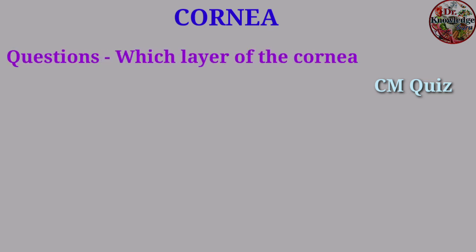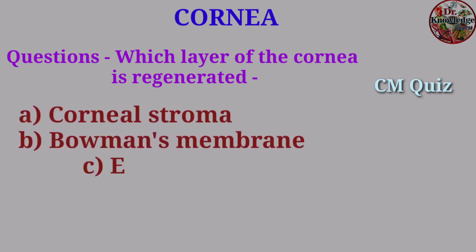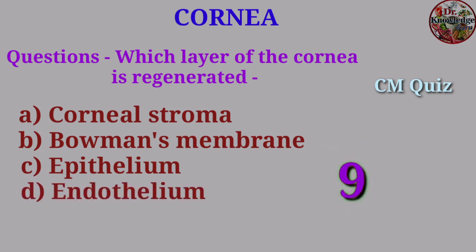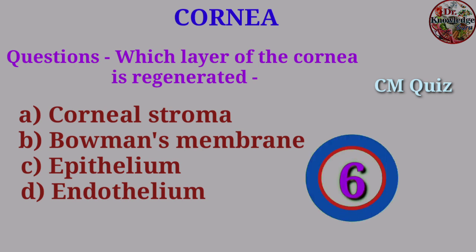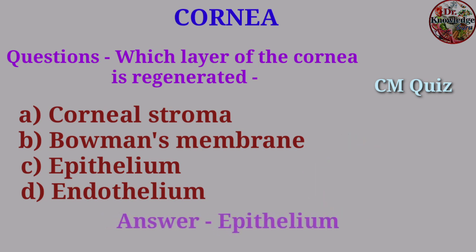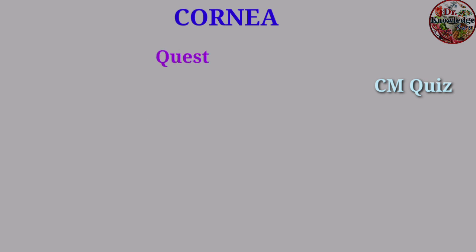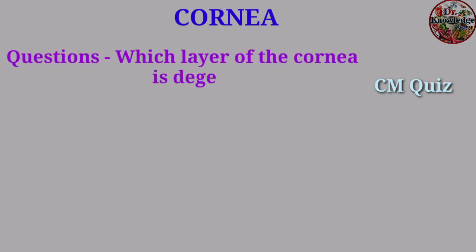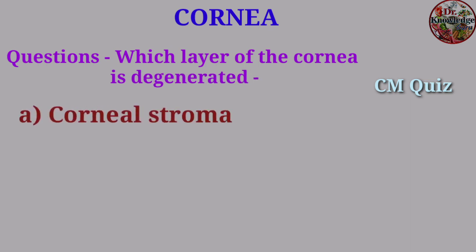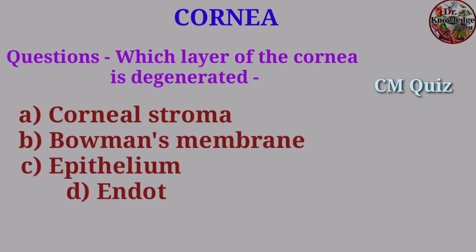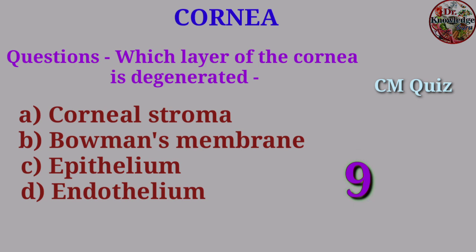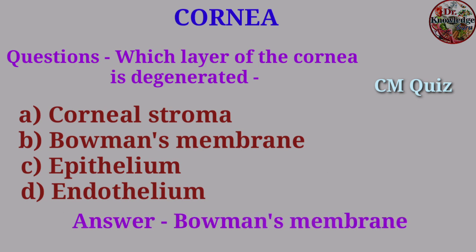Question: Which layer of the cornea can regenerate? A. Corneal stroma, B. Bowman's membrane, C. Epithelium, D. Endothelium. Answer: Epithelium. Question: Which layer of the cornea degenerates (cannot regenerate)? A. Corneal stroma, B. Bowman's membrane, C. Epithelium, D. Endothelium. Answer: Bowman's membrane.